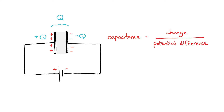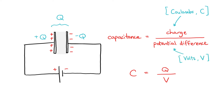In symbols, capacitance is capital C, charge is Q, and the potential difference is V. The unit of charge is coulombs, potential difference in volts, so the unit of capacitance is coulombs per volt. Or more commonly, we refer to it as farads.